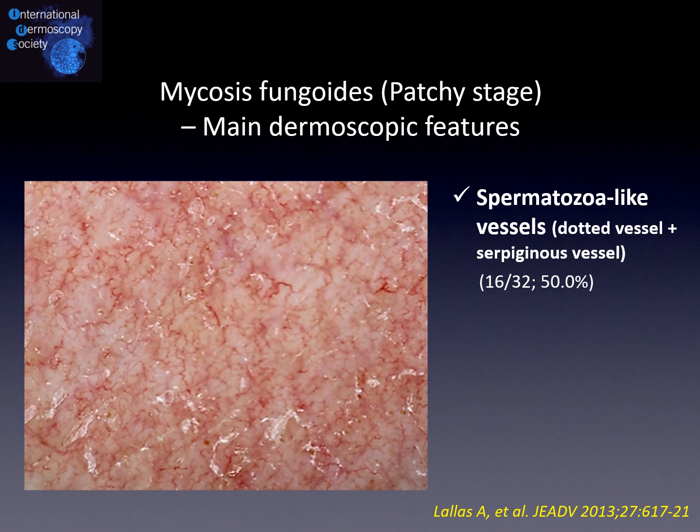The same study highlighted another interesting dermoscopic finding, namely spermatozoid-like vessels, which are due to the combination of dotted vessels and serpiginous vessels. Even though this feature is less common, it has been found to be quite specific for this condition.